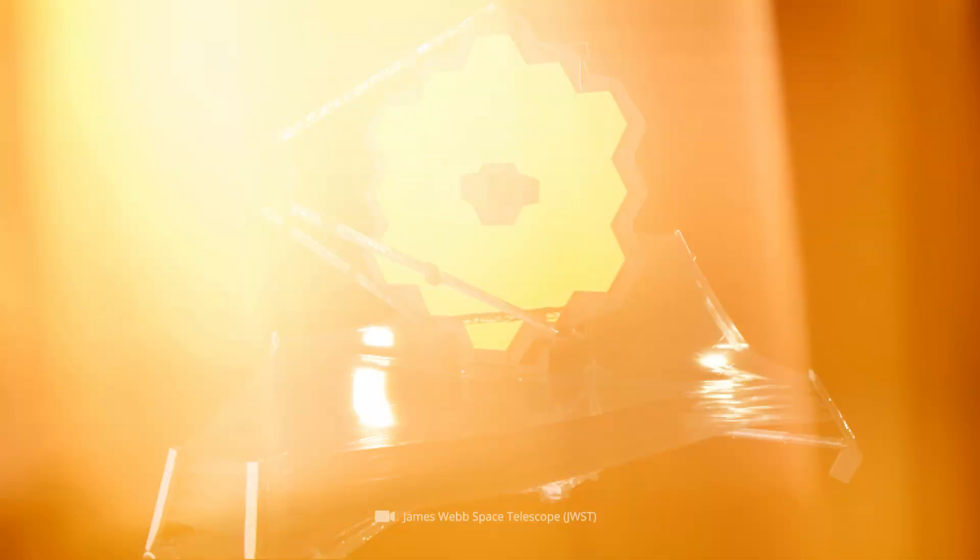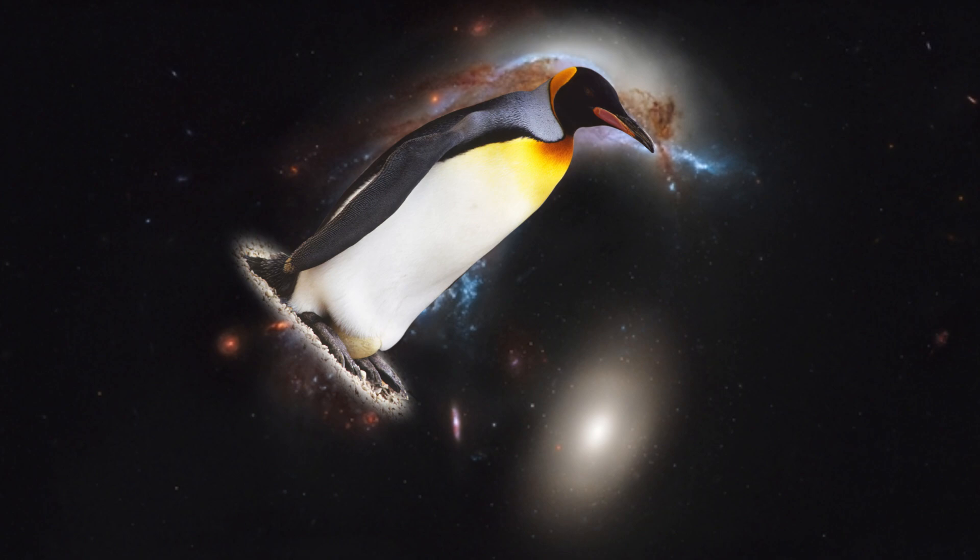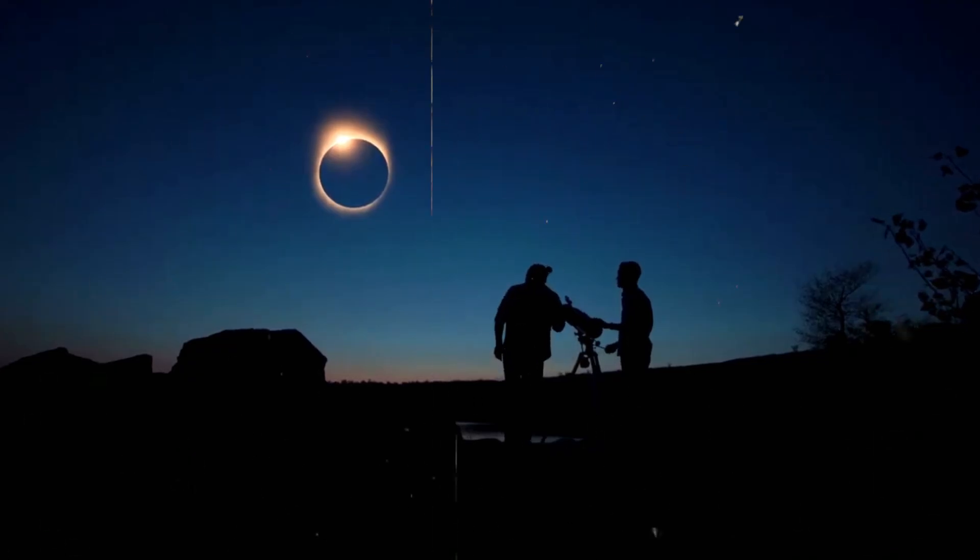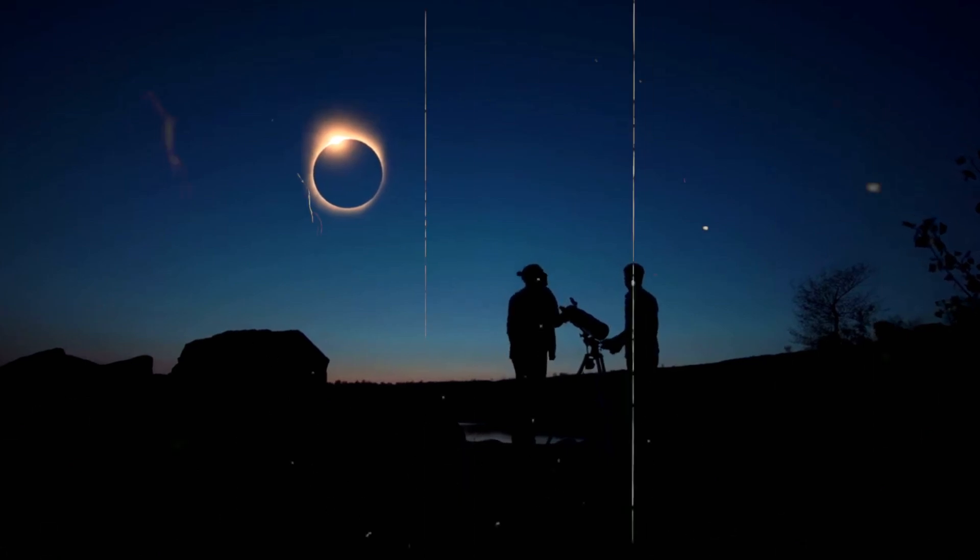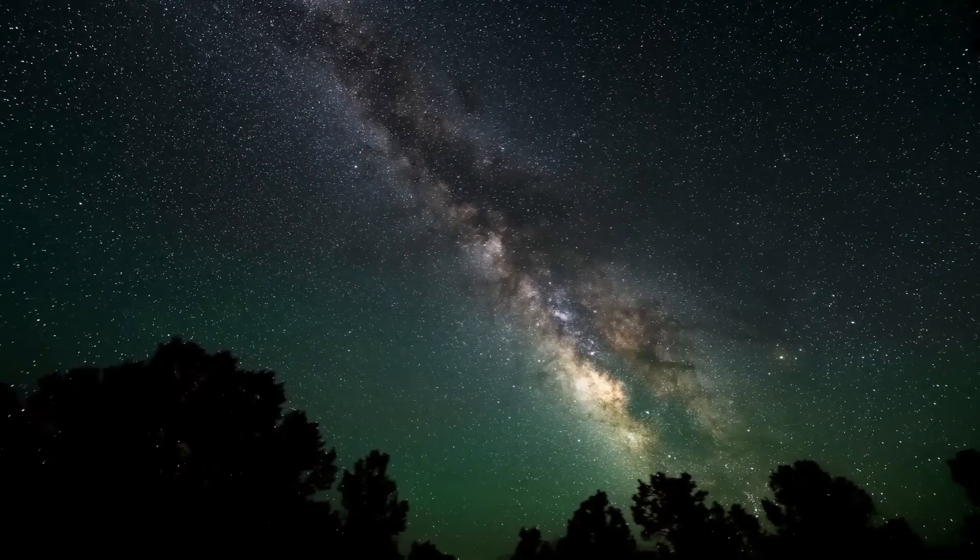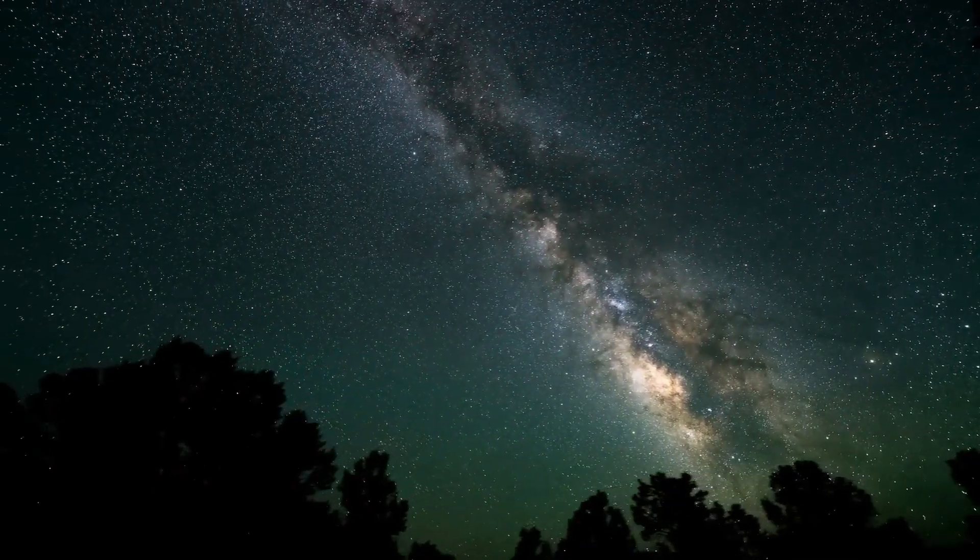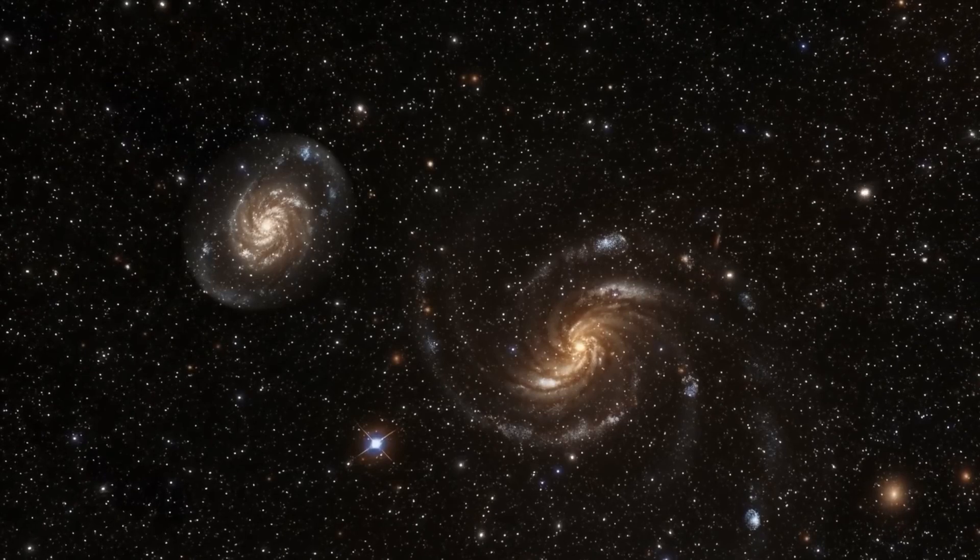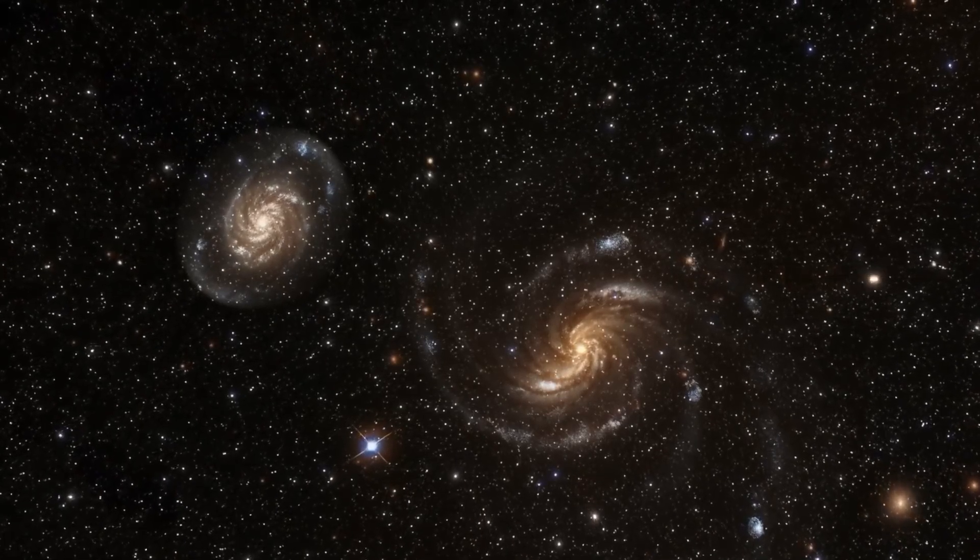To us, Webb may seem to have captured a glowing penguin and its egg floating in space. But if you ask an astronomer, they'll explain that the image shows the pair of galaxies ARP 142, which are about 326 million light years away and have been engaged in a close dance in space for quite some time.